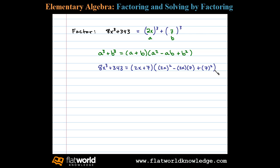All that's left to do is simplify. That leaves us with 2x plus 7 times 4x squared minus 14x plus 49. Now the trinomial here is prime, and the factorization is complete.